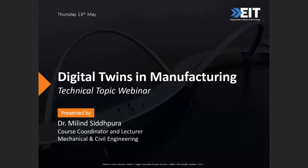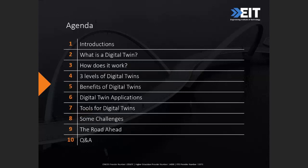These webinars are recorded and everyone will be sent a recording of the presentation and the PDF slides afterwards. For our technical topic webinars, we also offer a free digital certificate of attendance, which you can request by filling out a form at the end of the webinar. We will provide you the link for that. This is our agenda for today: a slight introduction, what is a digital twin, how does it work, three levels of digital twins, benefits, applications, tools, some challenges, the road ahead, and a Q&A section at the end.